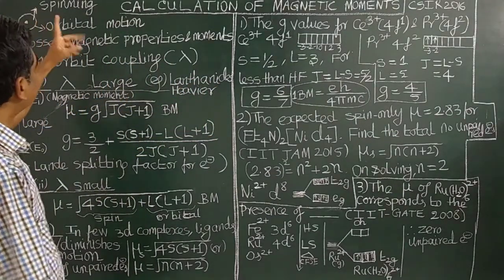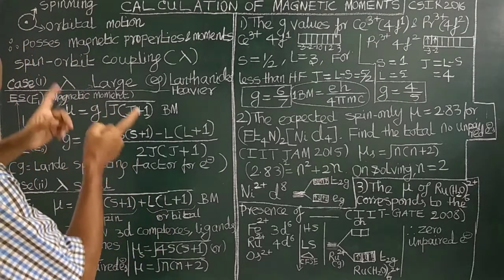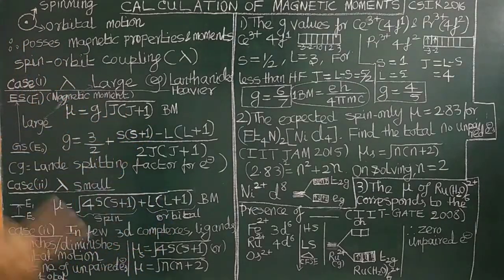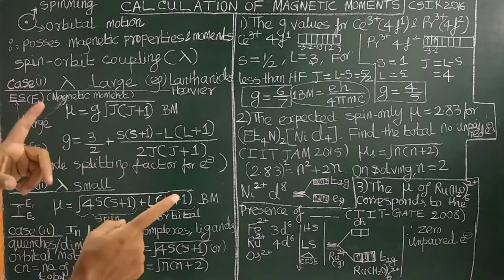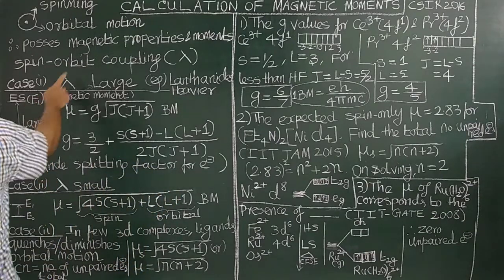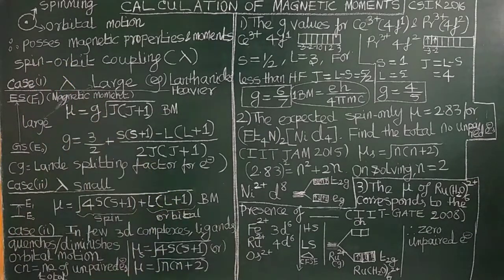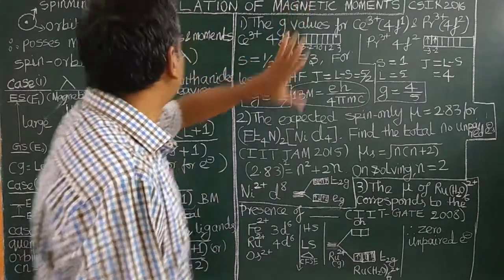The spin magnetic moment and orbital magnetic moment are two vectors. In a magnetic field, you can compare two vectors. There are three cases, and the spin-orbit coupling is the basis for the calculation of magnetic moment.